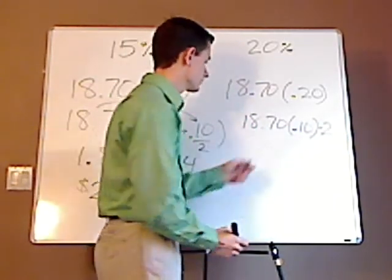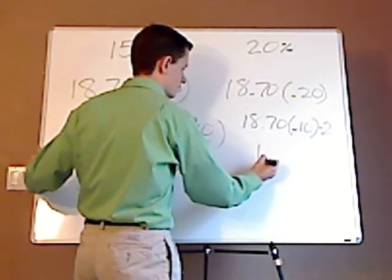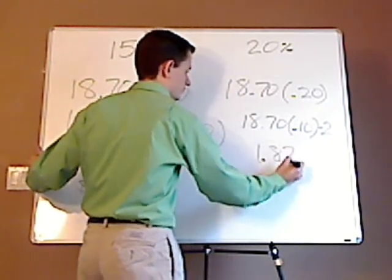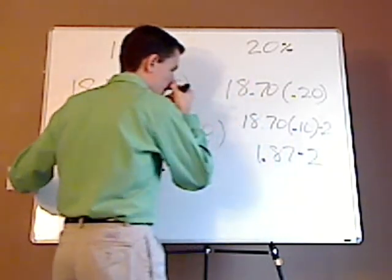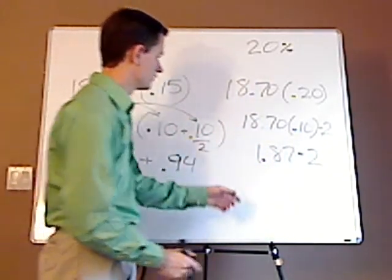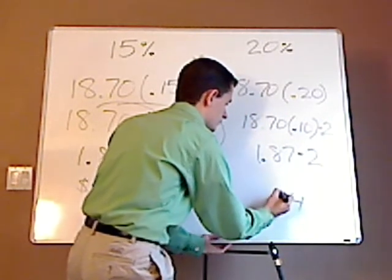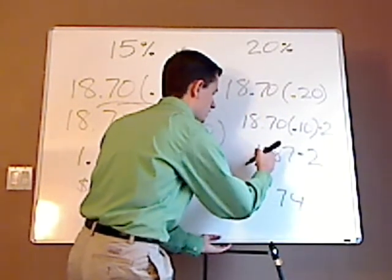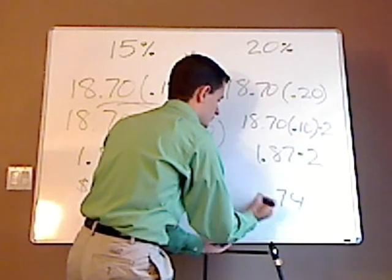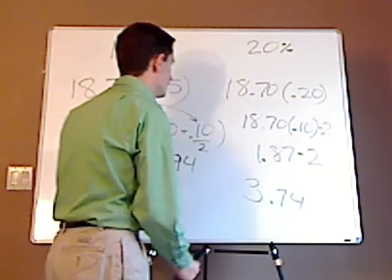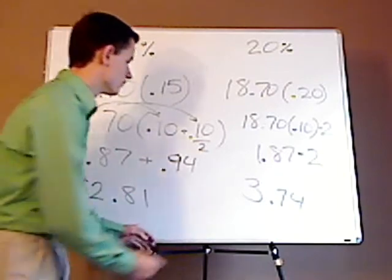So do this first. This is 1.87, and you still have to double it. Doubling it, you have 4, carry the 1, 7, carry the 1, 3. So 20% would be $3.74.